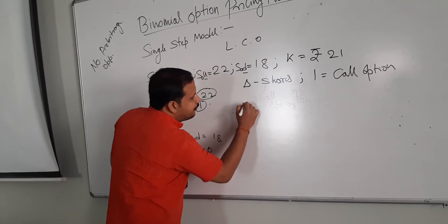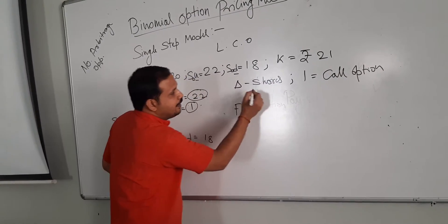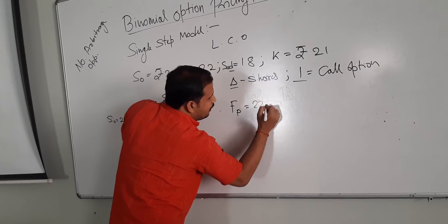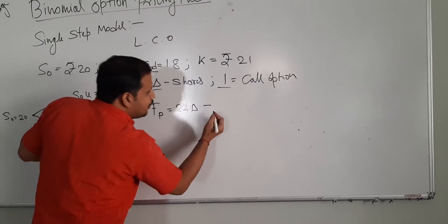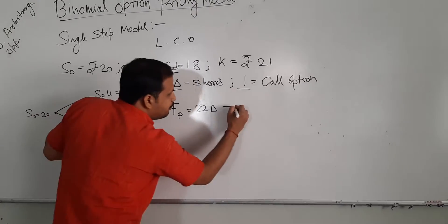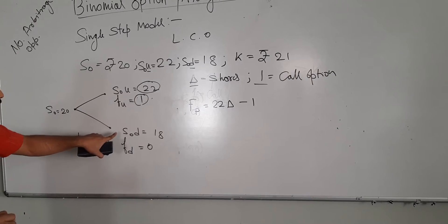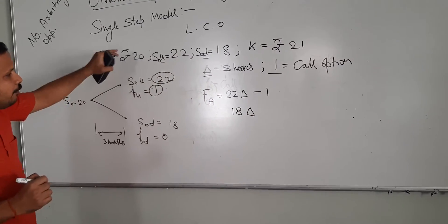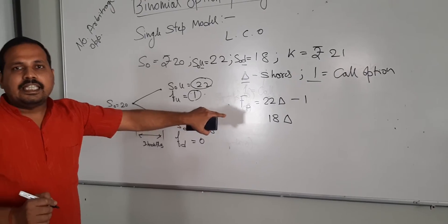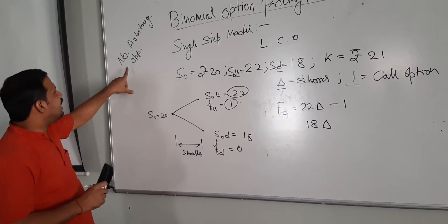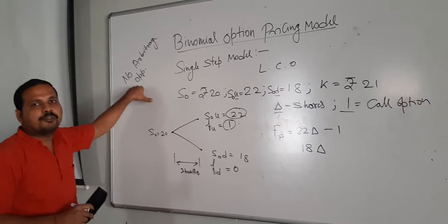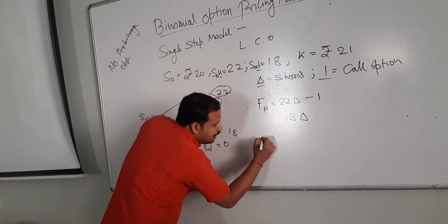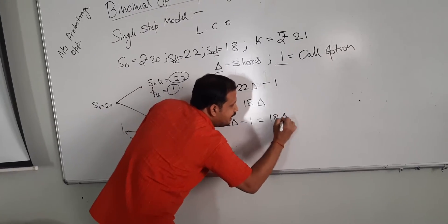If we calculate the future value of the portfolio that we created using delta number of shares and one call option, it would be equal to 22 delta minus 1. Because we have only one call option and the value of the call option is 1. Similarly, if we calculate the value for the downward movement, it would be equal to 18 delta. We must remember the assumption that no arbitrage opportunity is available and it is a riskless portfolio. Therefore the two future values must be equal: 22 delta minus 1 must be equal to 18 delta.